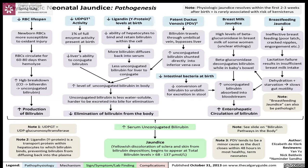Breastfeeding jaundice results from ineffective breastfeeding — poor latching, cracked nipples, or breast engorgement causing lactation failure, leading to insufficient milk intake. This causes dehydration and starvation, slowing gut motility, increasing enterohepatic circulation, and resulting in jaundice. This type of jaundice can be considered pathologic. The total result is increased serum unconjugated bilirubin causing clinical jaundice.